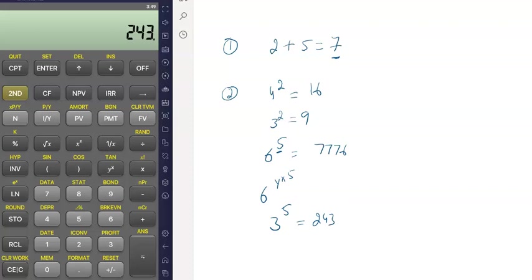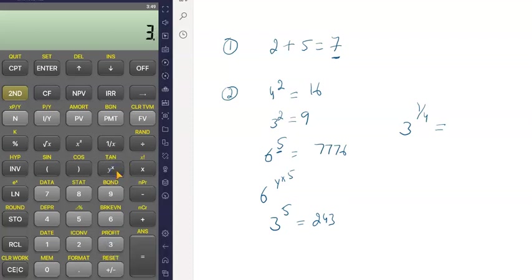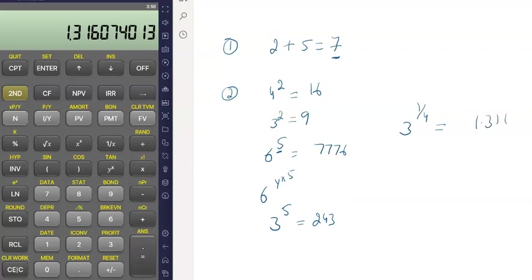After every calculation, clear your work by pressing the CLR WORK button. Now, if you want to take a fractional power like three raised to power one-over-four, press three, then the yx button, then four, then press the 1/x button to invert it to one-over-four, then press ENTER. The result is 1.316.